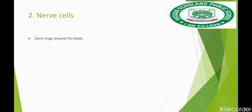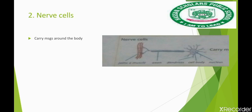Nerve cells are the cells that carry messages around the body. They make up the nervous system, which includes the peripheral nervous system consisting of all the nerves in our body.